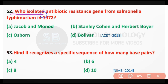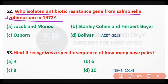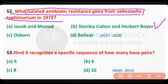Question number 52. Who isolated the antibiotic resistance genes from Salmonella typhimurium in 1972 — Jacob and Monod, Stanley Cohen and Herbert Boyer, Osborne, or Bolivar? The correct answer is option B. Stanley Cohen and Herbert Boyer isolated the antibiotic resistance genes from Salmonella typhimurium.